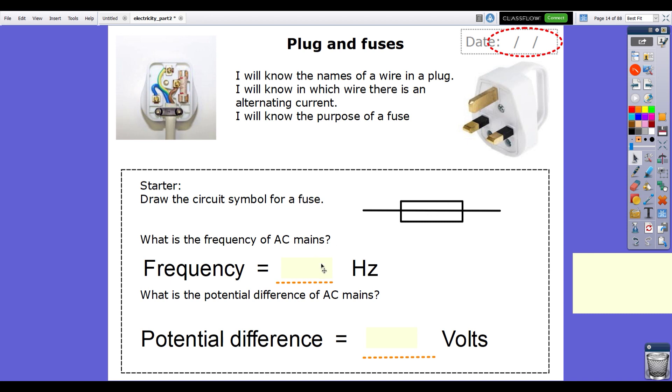What was the frequency of AC mains when we did that last lesson? It's 50 hertz, that means the electrons change direction 50 times per second. And the potential difference in the UK is 230 volts. Well done if you got those.